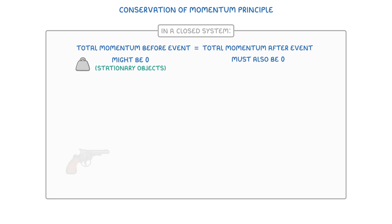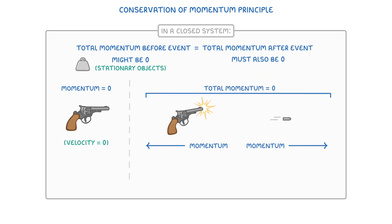For example, if we imagine a gun before it's fired, then its initial momentum would be zero because its velocity is zero. However, once the gun fires, the bullet that flies out will have a momentum in the forward direction. And so to compensate for this, the gun has to recoil backwards with an equal momentum, so that together the total momentum is still zero.